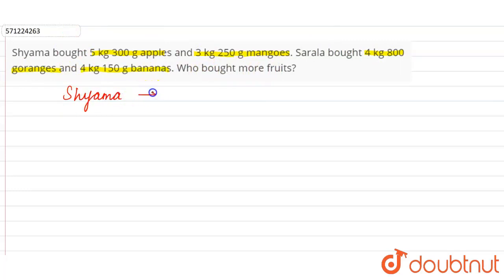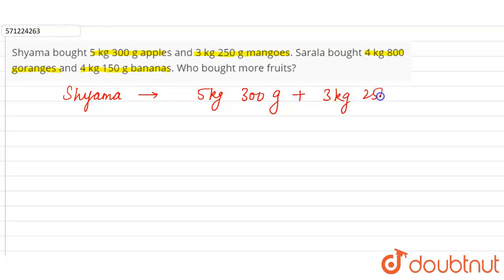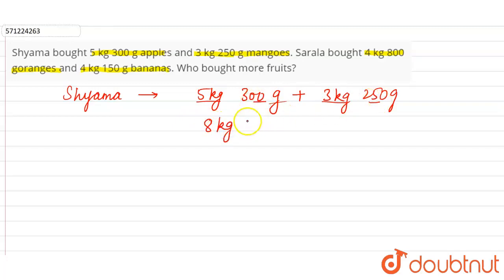Let's write the total weight of fruit that Shama bought: 5 kg 300 grams plus 3 kg 250 grams. Adding the kg together: 5 plus 3 is 8 kg. Adding the grams: 300 plus 250 is 550 grams. So Shama bought a total of 8 kg 550 grams.